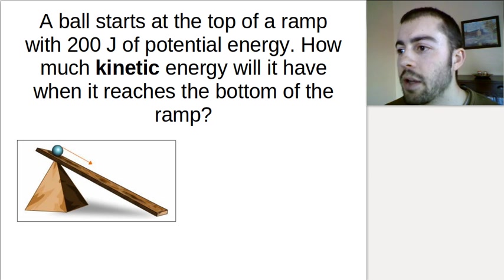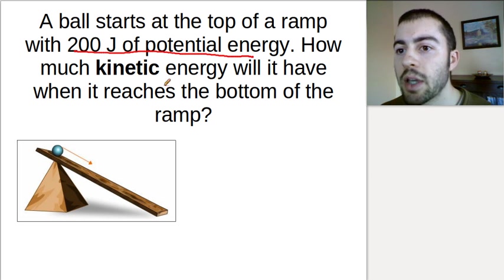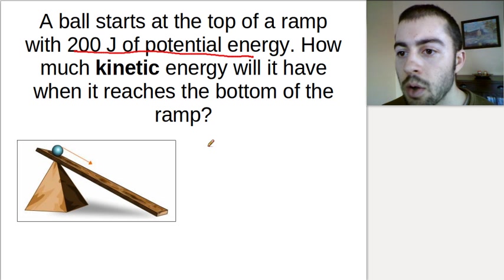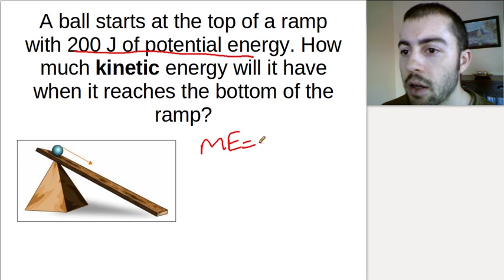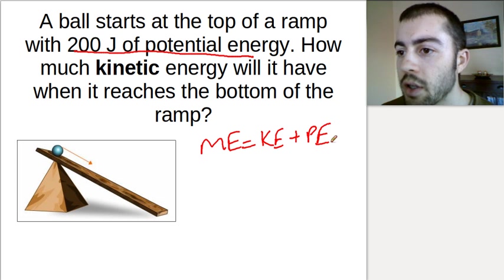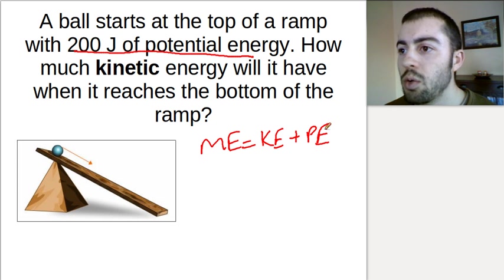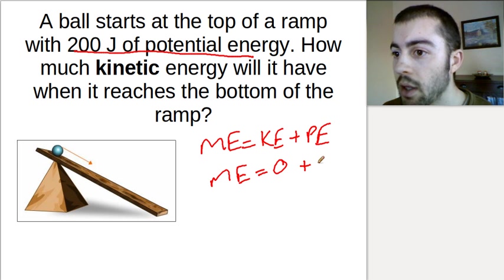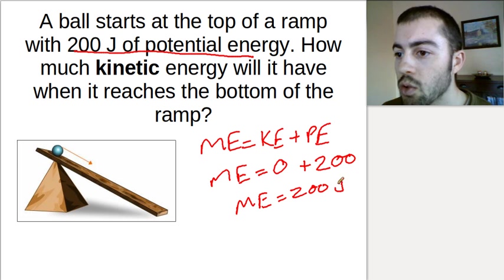Let's think about this. If we have a ball at the top of a ramp and it has 200 joules of potential energy, how much kinetic energy will it have when it reaches the bottom of the ramp? If we think about this using the mechanical energy formula — kinetic energy plus potential energy — and we have 200 joules of potential energy at the top before the object starts moving, that means our total mechanical energy would be zero kinetic energy plus 200 joules of potential energy, giving us a mechanical energy of 200 joules.